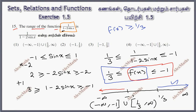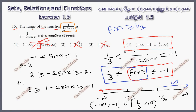So the correct option is the first option — but checking the brackets, the in-between interval, the excluded region is between minus 1 and 1 over 3. So the correct answer is option 4.